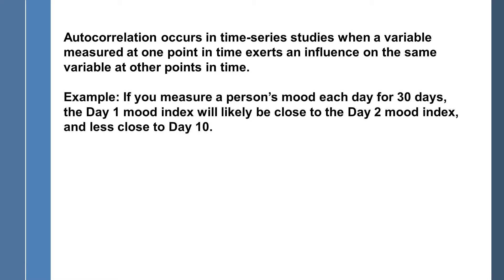For the first example, imagine that you measure a person's mood every day for 30 days. The day one mood index measurement is going to likely have an impact on the day two mood index. If a person is feeling rather poorly on day one when you see them in therapy, chances are on day two you will not see a dramatic change, but rather day two's measurement will be fairly close to day one. The day one measurement should be less close to day ten — by day ten you'll see a lot more variability. This is what we're talking about when we talk about autocorrelation: a variable is correlated with itself in a lag time series aspect when it exerts an influence on successive measurement points in time.